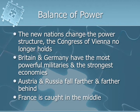The new nations changed the balance of power established at the Congress of Vienna, so those agreements no longer held. Britain and Germany had the most powerful militaries and strongest economies — a distinction that has lasted to this day, as they remain the most powerful in Europe. Austria and Russia fell farther and farther behind, while France was caught in the middle.